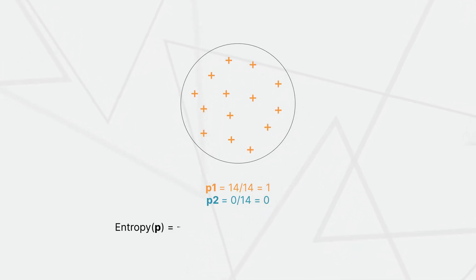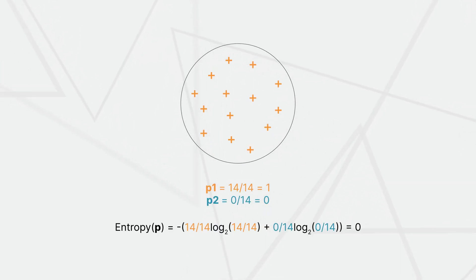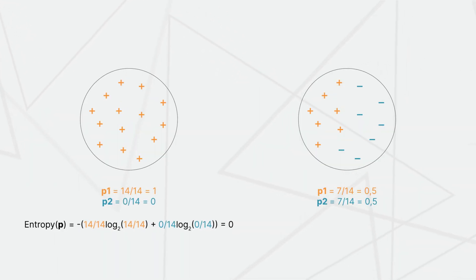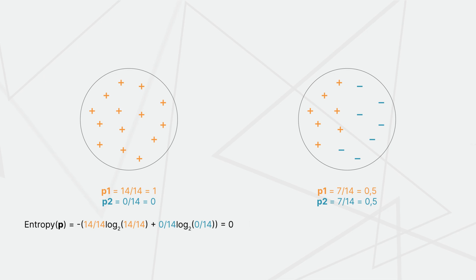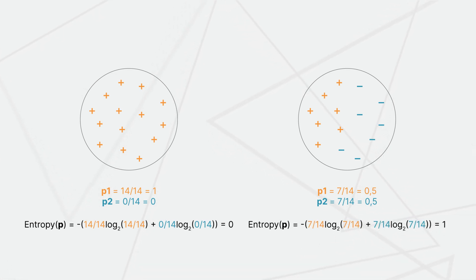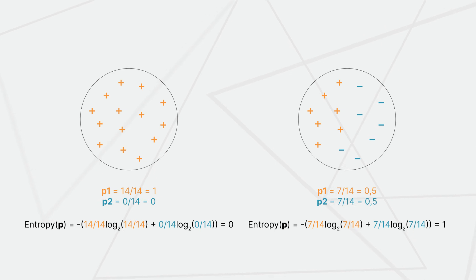For a data set of 14 points all in the plus or in the minus class, entropy is 0 — that is, there is no information available. For a data set of 14 points with 7 plus points and 7 minus points, entropy is 1 — that is, there is a lot of information still available. Entropy describes the amount of information still available for discovery in the data set.